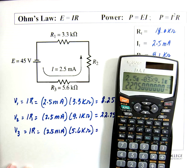2.5 milliamps times 5.6 kilohms. 2.5 exponent negative 3 times 5.6 exponent k, which is 3, equals 14.